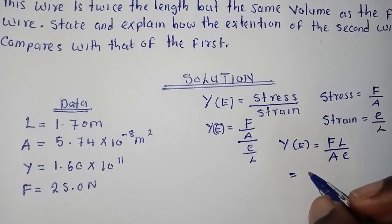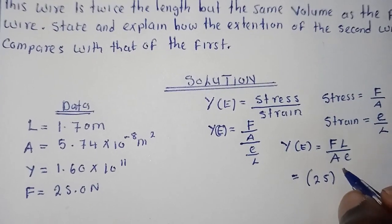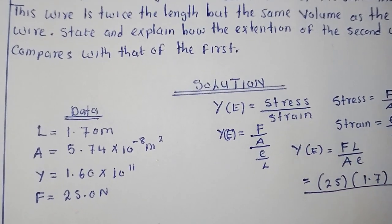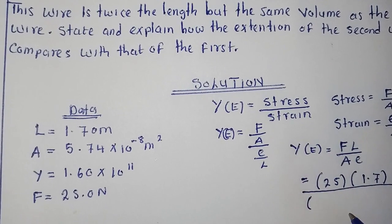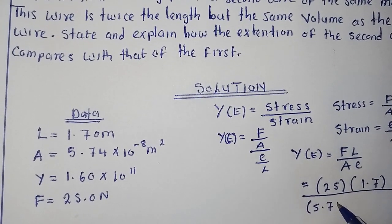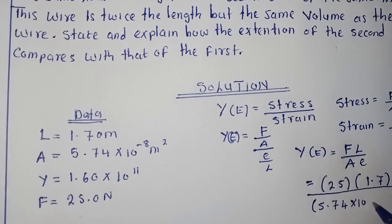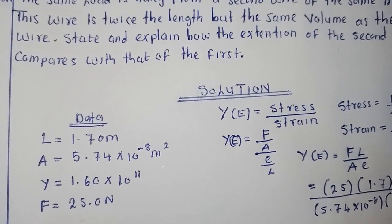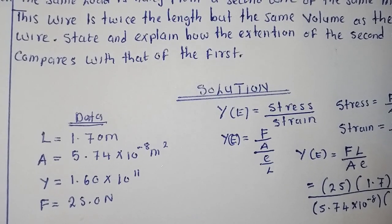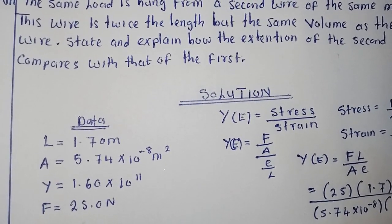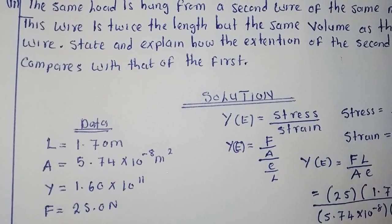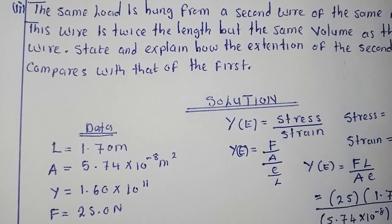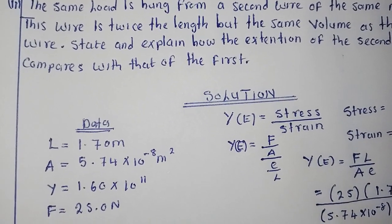From this formula we can calculate everything. We have: force is 25 Newtons, length is 1.0, over area which is 5.74 times 10 to the power negative 8. We want to find the extension. We already have the Young's modulus, so let's make extension the subject of the formula.